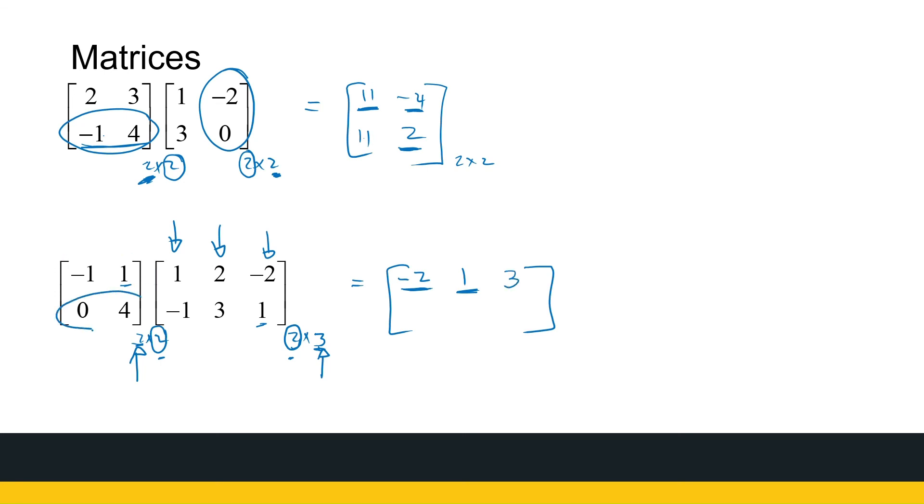Now we're looking at row 2. Inner product with column 1. 0, minus 4, is minus 4. Row 2, column 2. 0, plus 12, is 12. Row 2, column 3. Inner product. 0, plus 4, is 4. And that's the product of two matrices. Now in the last video, we're going to be doing a lot more examples on the product of two matrices.